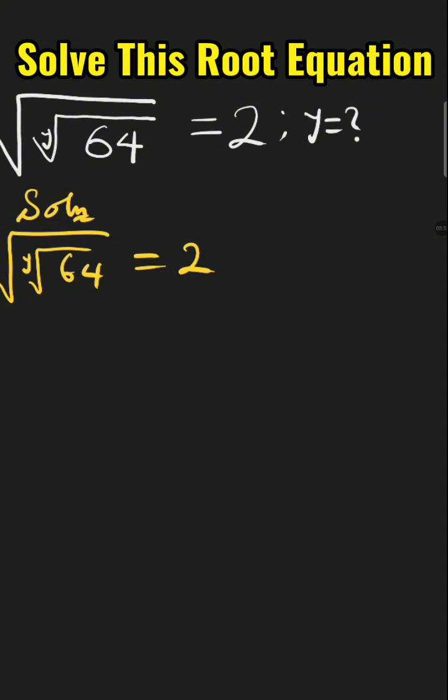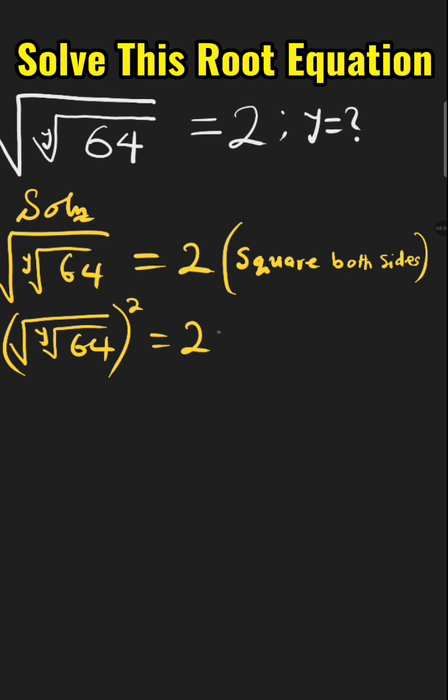Next, we take the square of both sides. When we take square of both sides, we are going to have root of white root of 64 all squared equal to 2 squared.